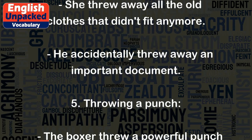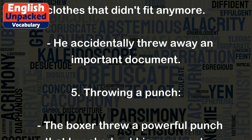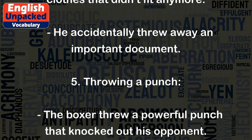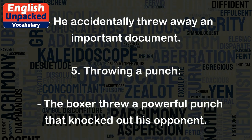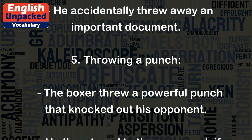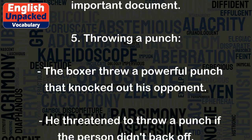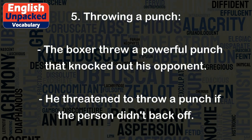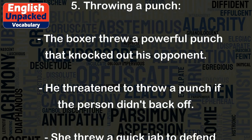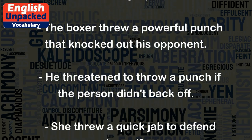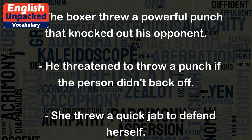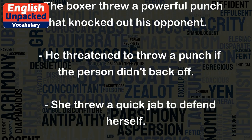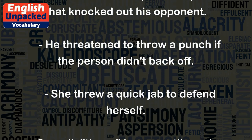5. Throwing a punch: The boxer threw a powerful punch that knocked out his opponent. He threatened to throw a punch if the person didn't back off. She threw a quick jab to defend herself.